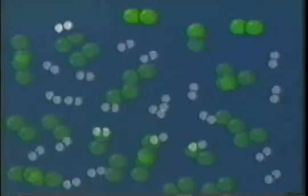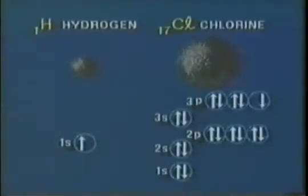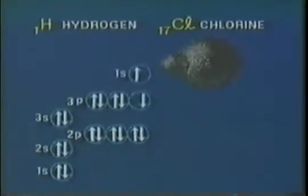Let's have another look at the reaction between chlorine and hydrogen. The product of the reaction is hydrogen chloride. Hydrogen needs one electron to form the electron configuration of helium, and chlorine needs one electron to form the electron configuration of argon. As a result, a single covalent bond forms between them.